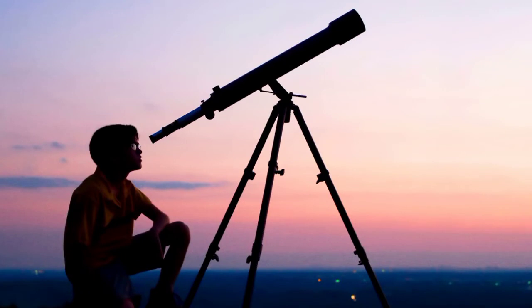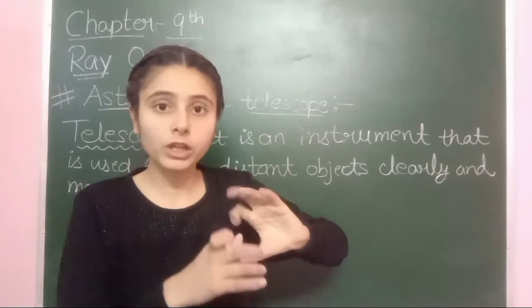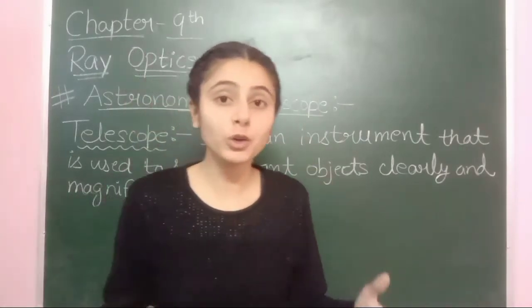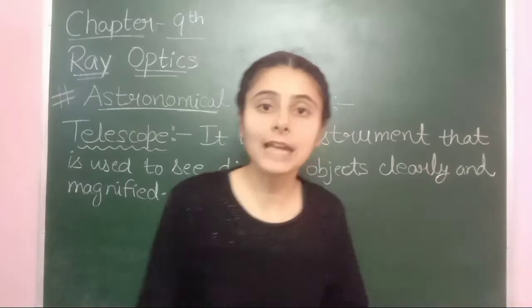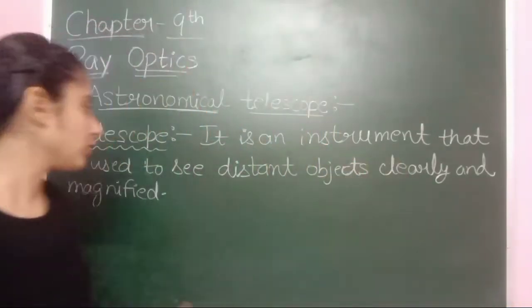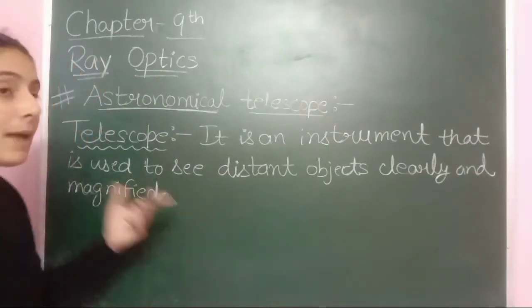The astronomical telescope is used to see objects such as stars and the moon. It is used to see distant objects clearly and magnified.